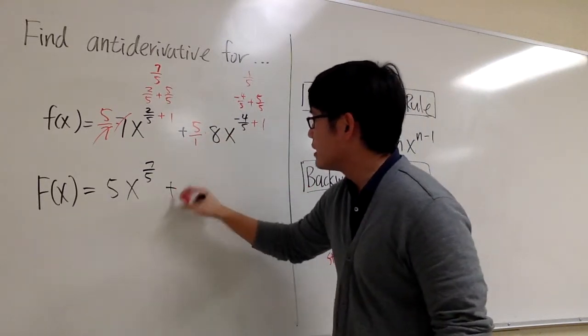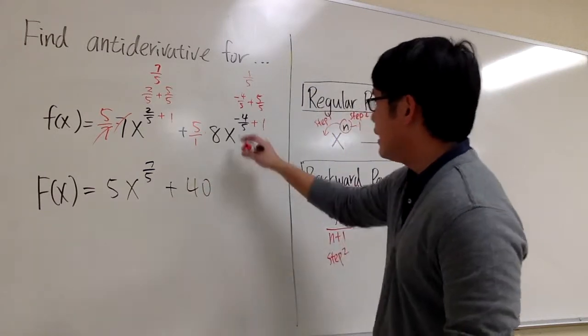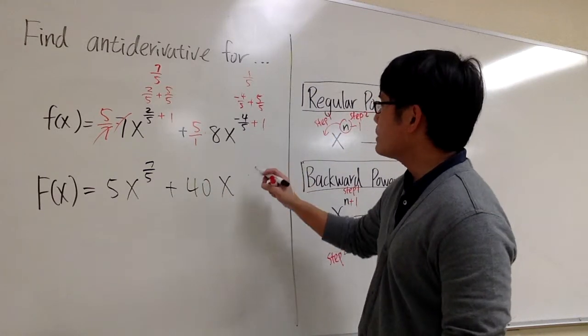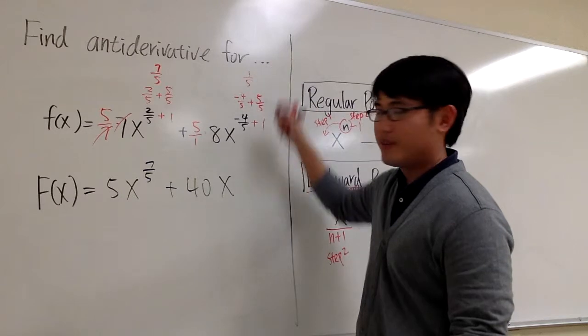So we have plus 5 times 8, which is 40. And we have the x, and the new exponent is 1/5. So we have it right here.